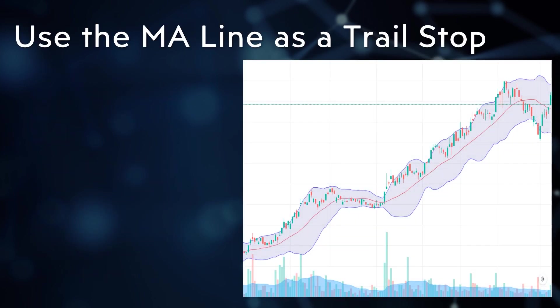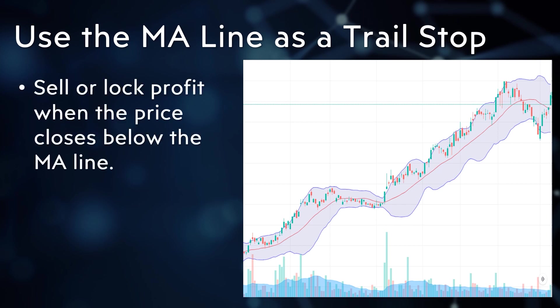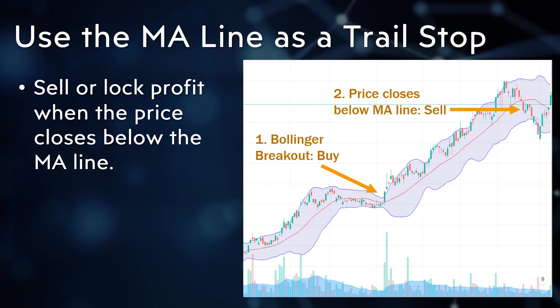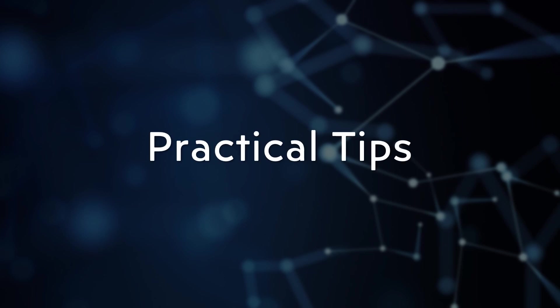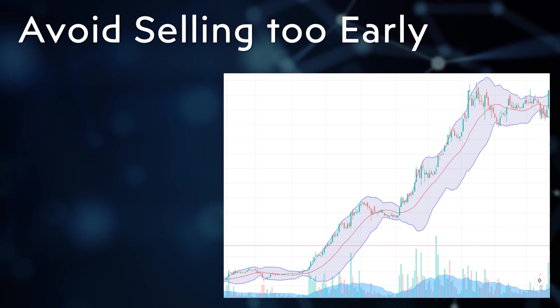Use the moving average line as a trailing stop. In an uptrend, sell once the price closes below the MA line, as a close below the MA may signal a change in momentum. In this chart, the price changed its momentum when it closed below the MA line, moving from an uptrend to sideways. The trader may lock in profits once these conditions are satisfied.